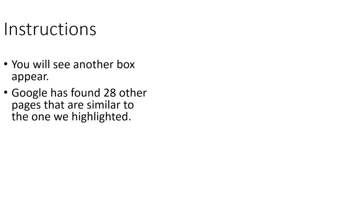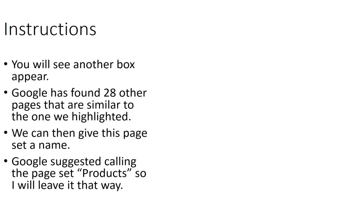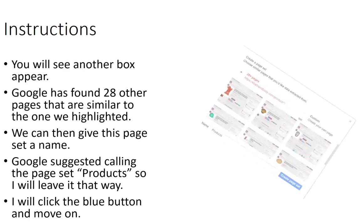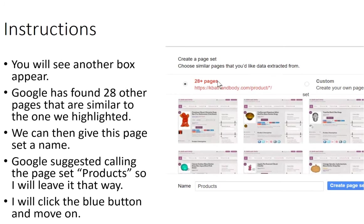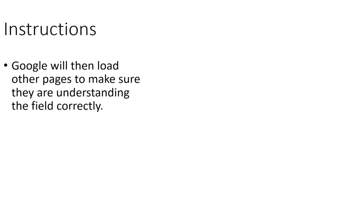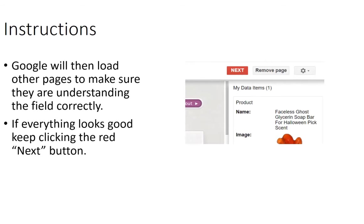You're going to see another box appear. Google has found 28 other pages that are similar to the one we highlighted. We can then give this a page set name — Google suggests calling it 'products,' so we'll leave it that way and click 'Create Page Set.' Google will then load other pages to make sure it's understanding the fields correctly, so if you have orange shea butter soap on one, you might have red shea butter soap on the next. If everything looks good, keep clicking the red Next button. If it doesn't look right, put your mouse in there, highlight, and correct Google — for example, telling it that's not the title, this is. You could correct Google as you go to help it better understand the page layout.